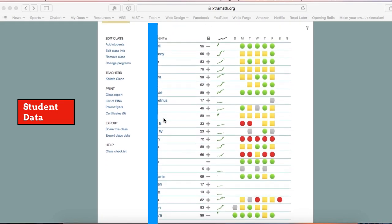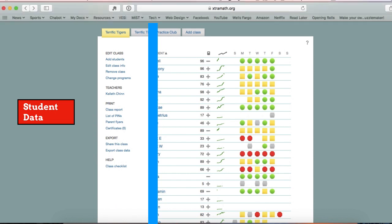Each student has a mastery score that ranges from zero to 100 percent. When students reach 100 percent, there's a certificate of completion that's generated for them and you can print it out, and then they move on to a new operation.